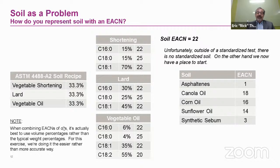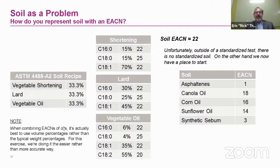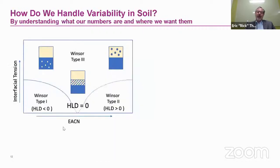Now we need another value for the equation: soil. How do we represent soil with an EACN number? Standard soils are straightforward — a common lab soil utilizing a lot of triglycerides gives an EACN of about 22. The problem is there really isn't such a thing as a standardized soil. In an industrial food plant or certain healthcare facilities you may see consistent soils, but in a kitchen or on a grill it's all over the place. The question becomes: how do we handle the variability in soil?